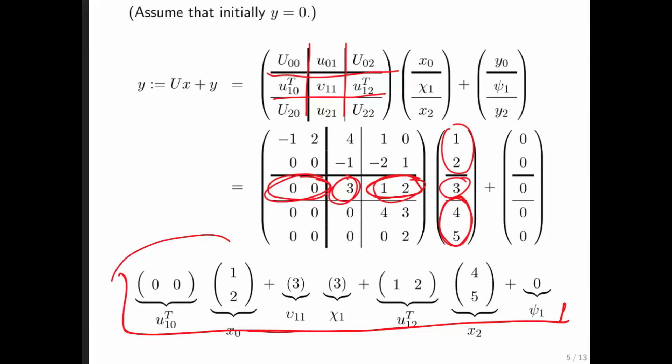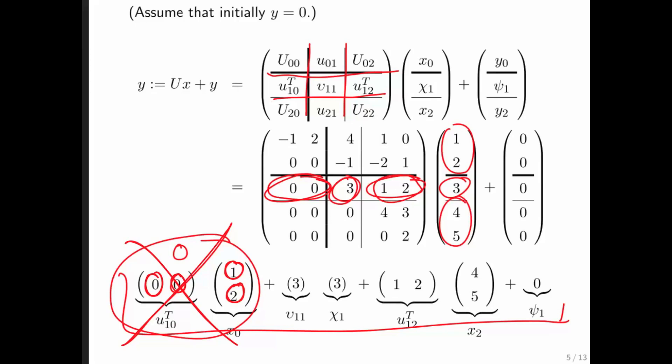The important part is that the way we march through the matrix, it is always the case that this first term equals 0, because it's 0 times this first element plus 0 times this second element. Therefore, we don't need to do that computation at all. That means we perform fewer floating-point operations.